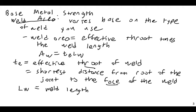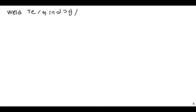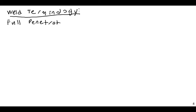LW equals weld length. The two main types of welds we'll be discussing are penetration welds and fillet welds. A full penetration weld completely fuses two pieces of metal together.